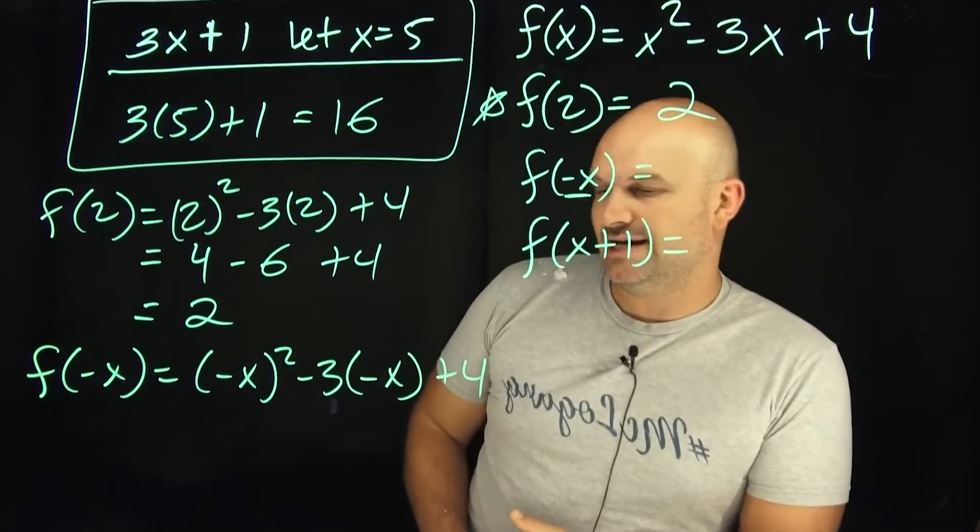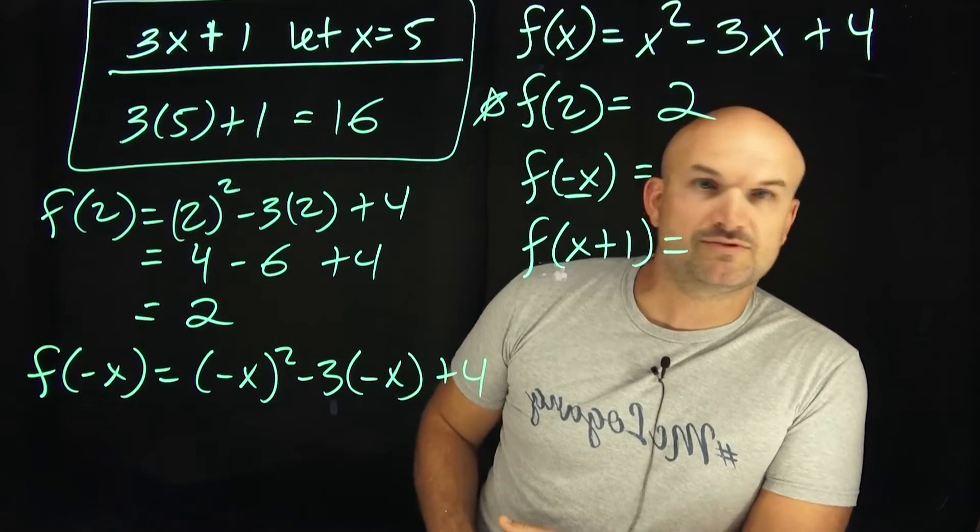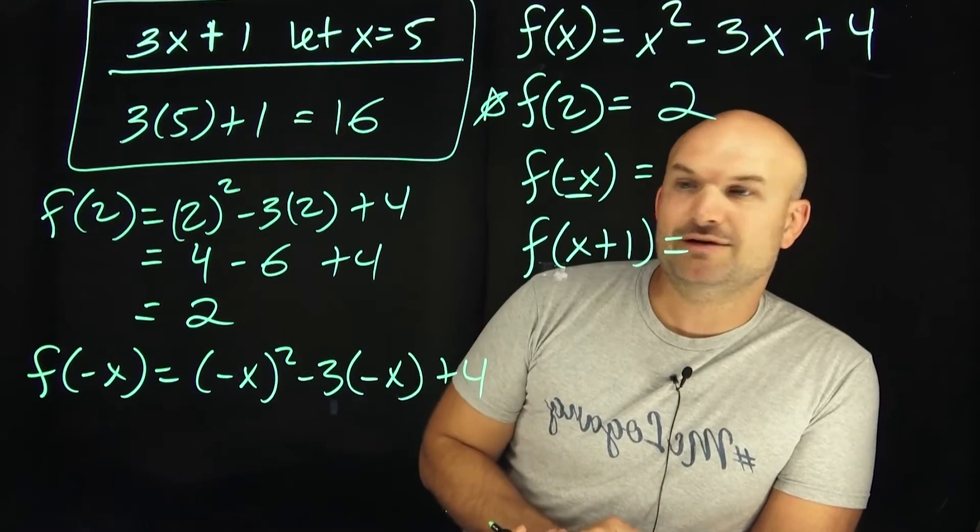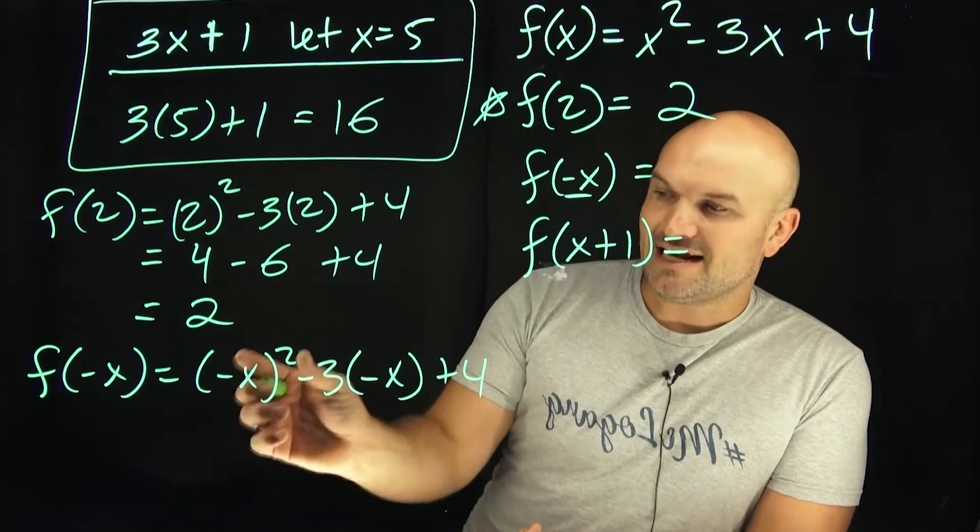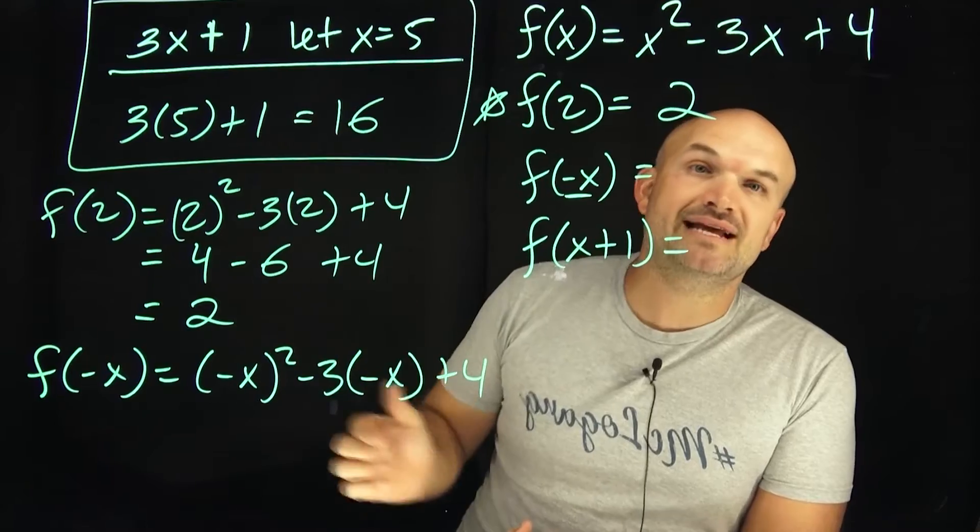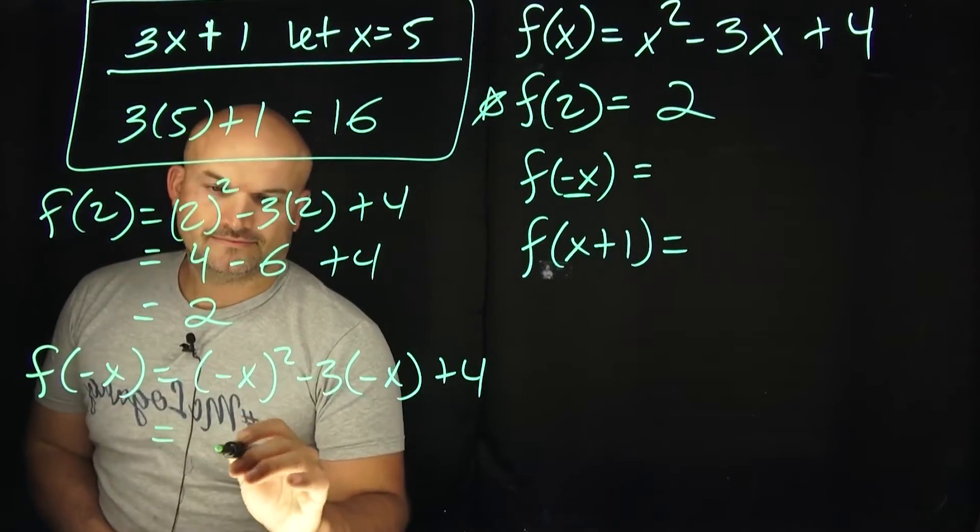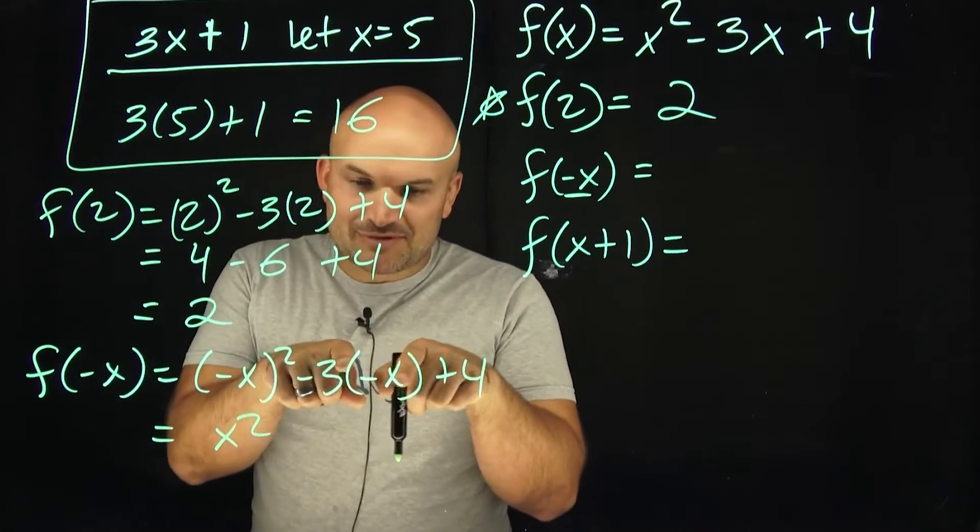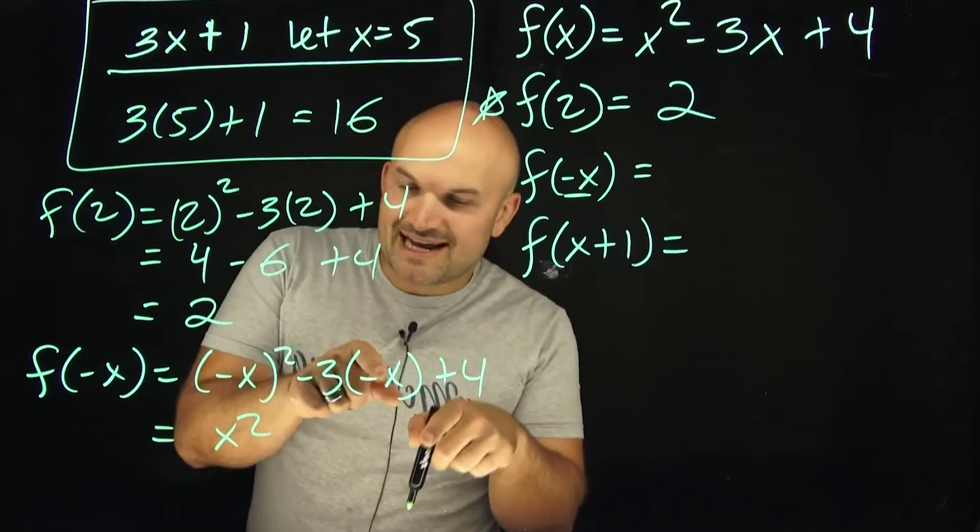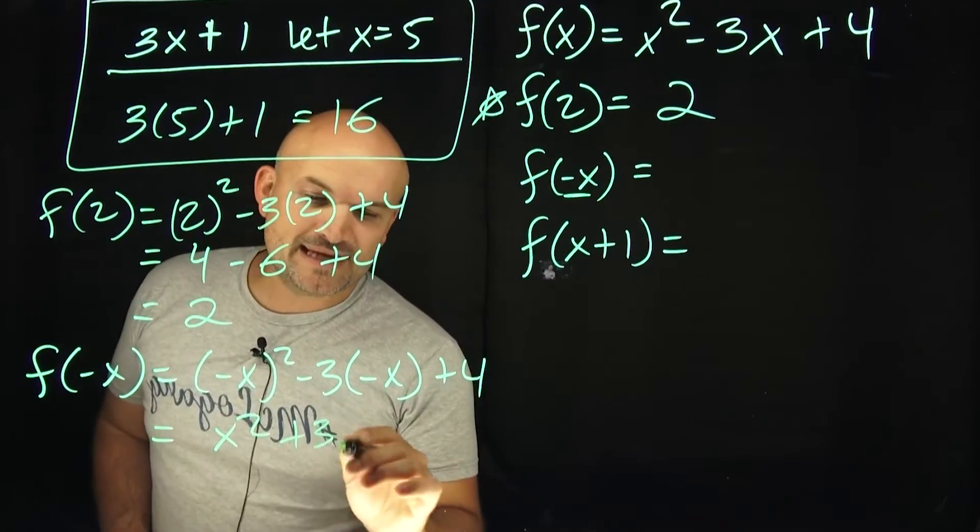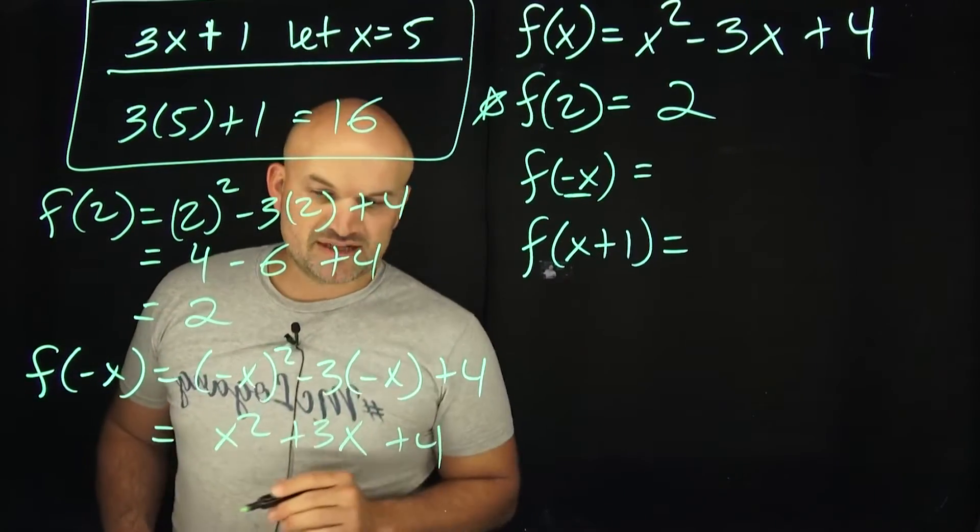So here's what I want you to see and understand about this. Because if you don't use parentheses, this is where you're going to get the problem wrong. Because what's usually going to happen is students will not do parentheses around here and they'll do negative x squared equals a negative x squared. That's not correct. Negative x squared represents negative x times negative x. That's actually going to give us a positive x squared. And then over here, a lot of times students will forget this and they'll forget to put the negative and just leave this as negative 3x. This is negative 3 times a negative x. That's also going to be a positive 3x plus 4.